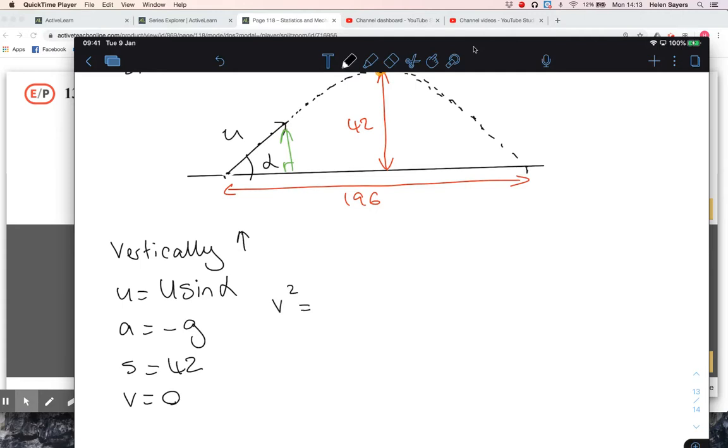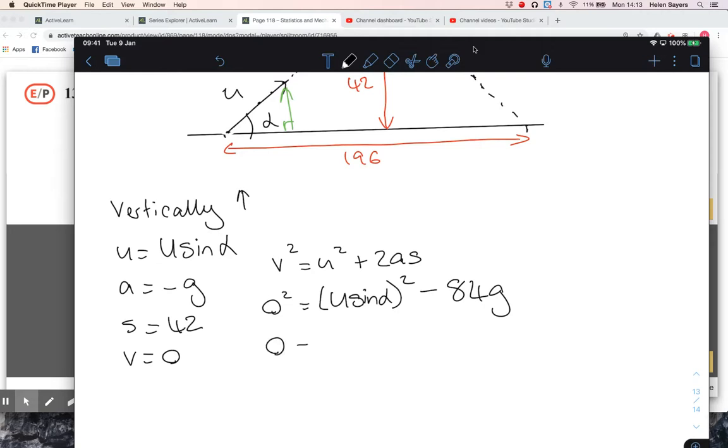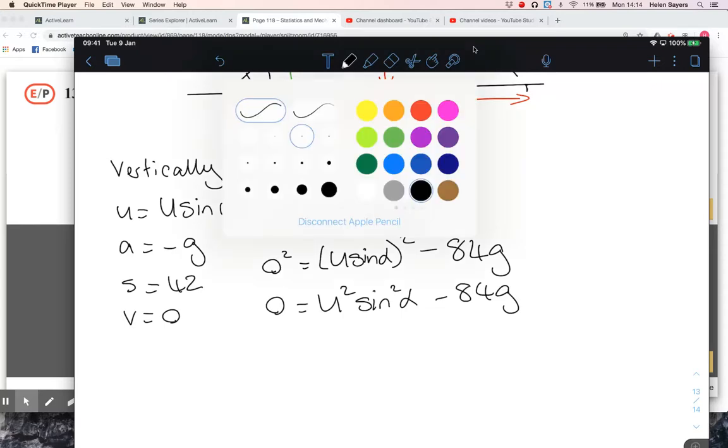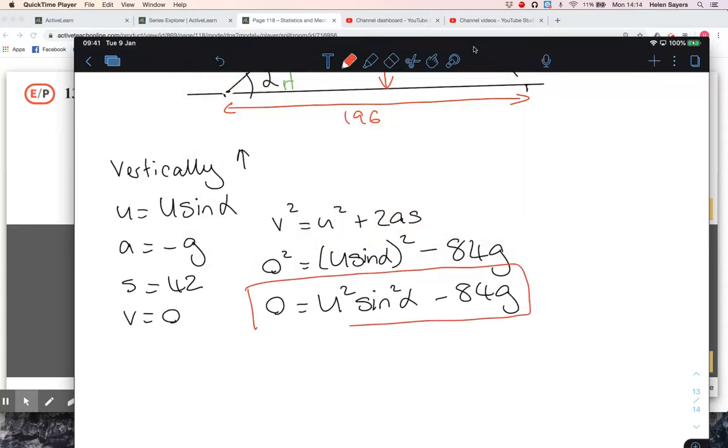I can put that into the SUVAT equation v squared equals u squared plus 2as. So zero squared equals u sine alpha all squared plus 2 times minus g times 42, so that'll make it minus 84g. Squaring out those brackets, I get u squared sine squared alpha equals 84g. That's got two unknowns, capital U and alpha, but hopefully that'll come in handy later on.